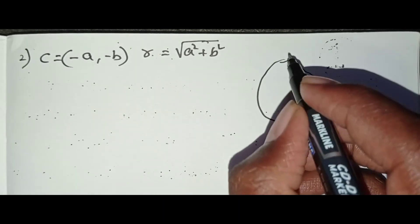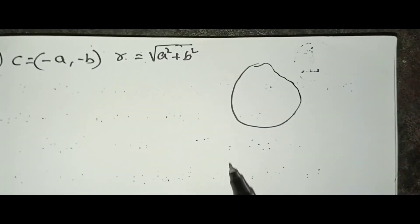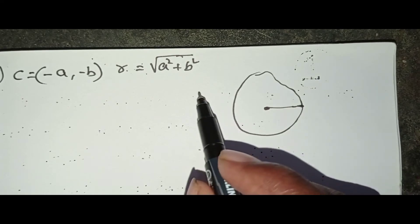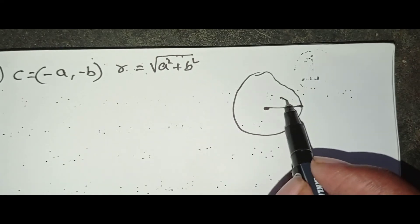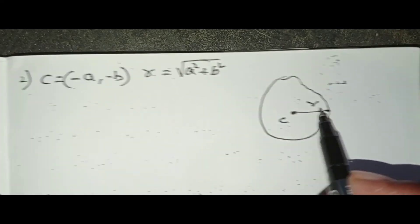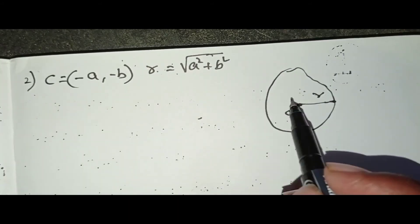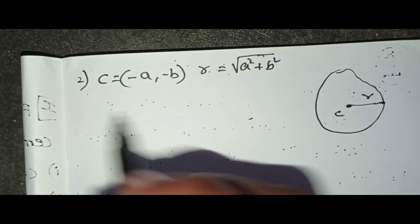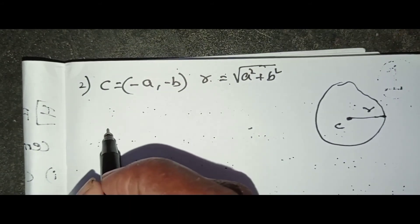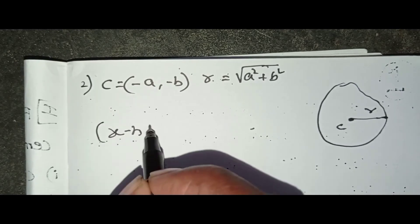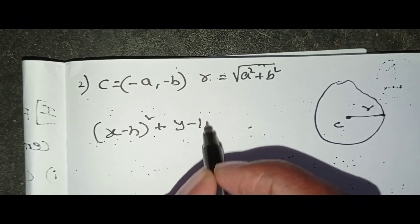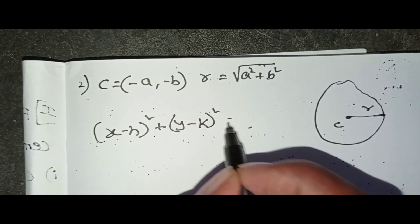Let's find the equation of a circle. Write the circle's center and radius, then write the formula: (x − h)² + (y − k)² = r².